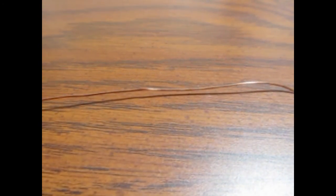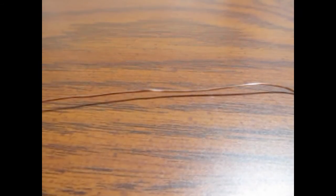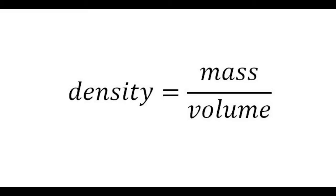I was wondering if this wire is copper or not, so I wanted to find the density of this wire. Density equals mass over volume.